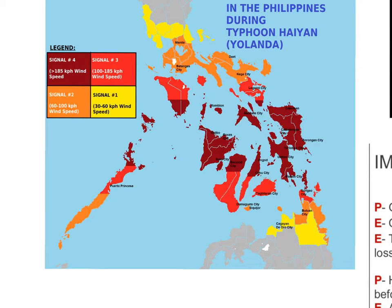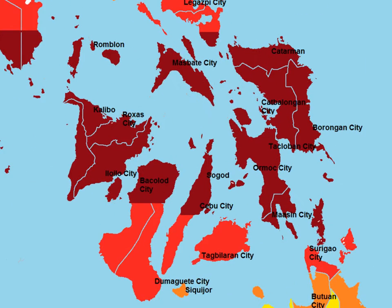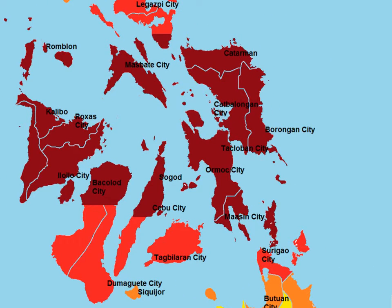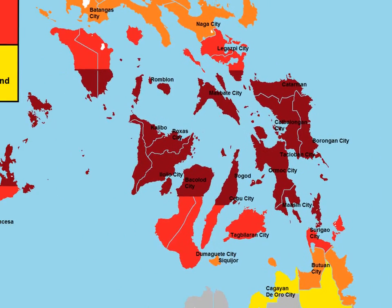Typhoon Haiyan was known locally as Typhoon Yolanda, and it made landfall in the Philippines on the 8th of November 2013. It was a Category 5 hurricane — the highest and most severe category — and brought sustained winds of 230 km per hour and gusts of up to 280 km per hour. The severity of the damage was predominantly in the central area, the eastern and western islands, known as the Visayas. Notably, Tacloban City, which we'll come back to in more detail later.